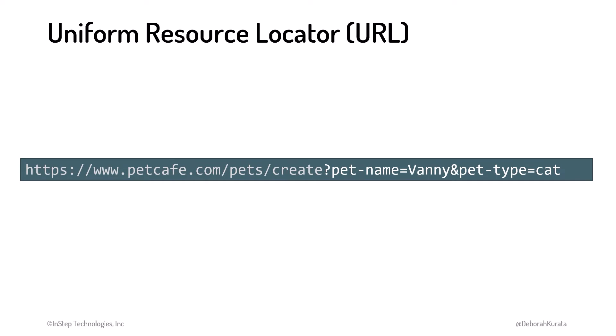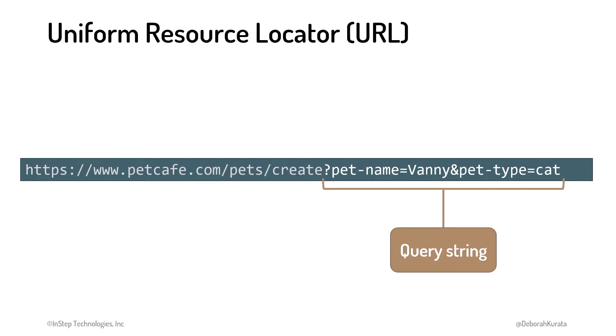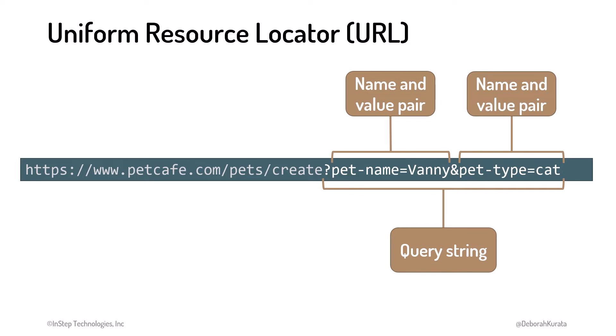You may see additional information added to the end of the URL. This is called a query string, and is used to pass information, or data, to the web server. For example, if our website allows a user to create a custom virtual pet, we pass the user's entered data to the web server for storage. Or if we were searching for socks, our entered search text could be passed as a query string. The query string starts with a question mark, then the data, defined as name and value pairs, separated with ampersands. Each name and value pair has a name that describes the data, an equal sign, and the data value. For the first pair, the name is pet-name and the value is vany. The second pair has a name of pet-type and a value of cat.